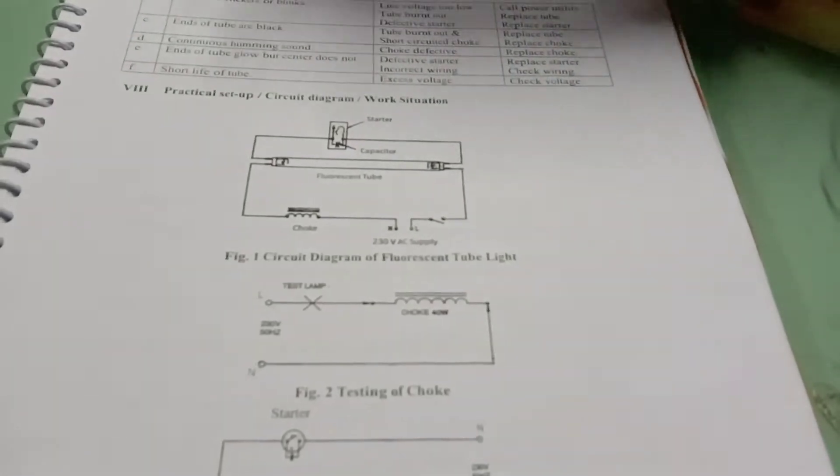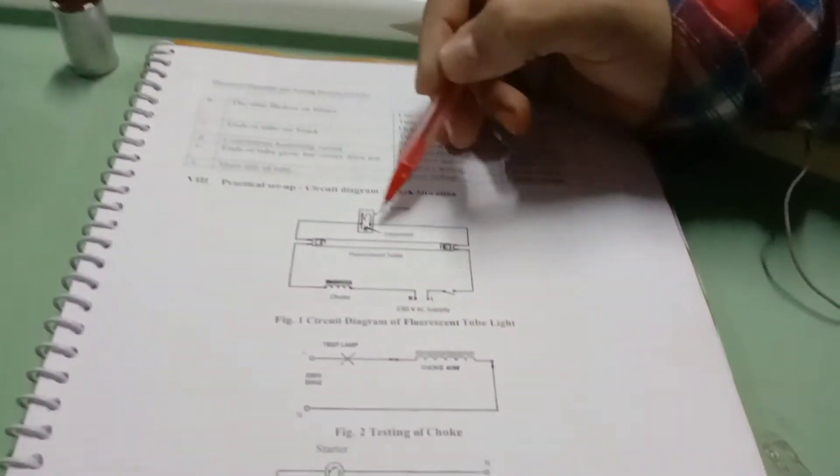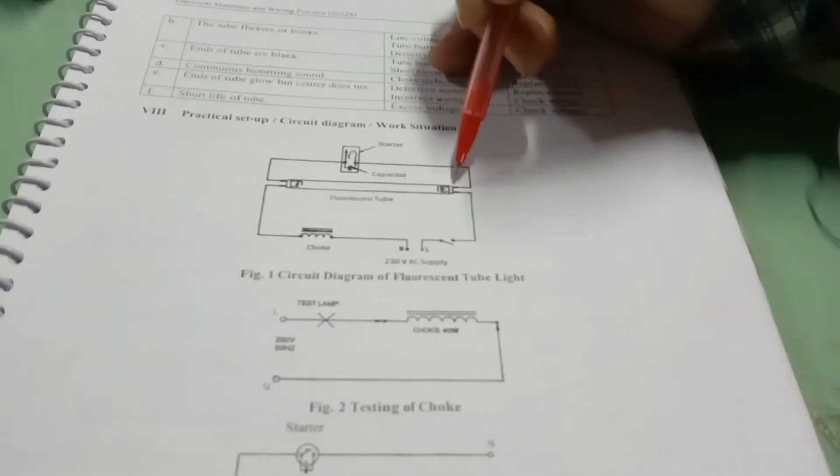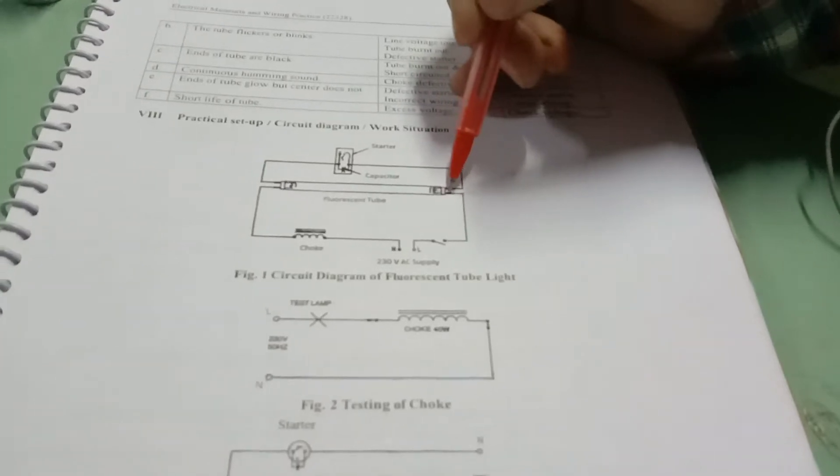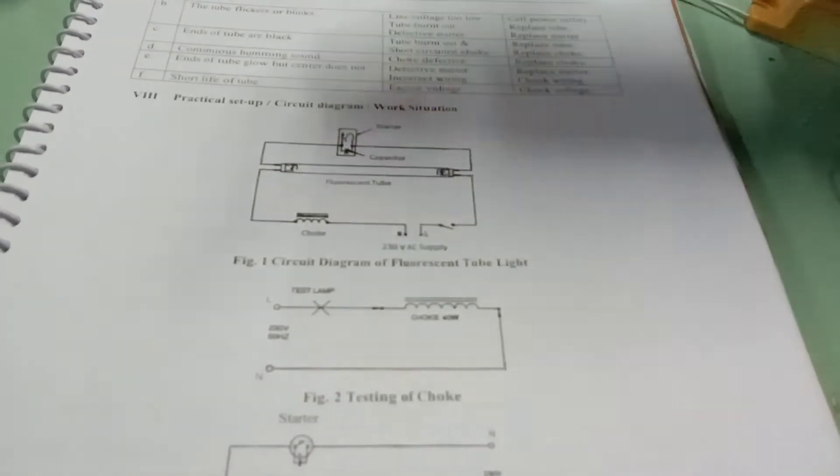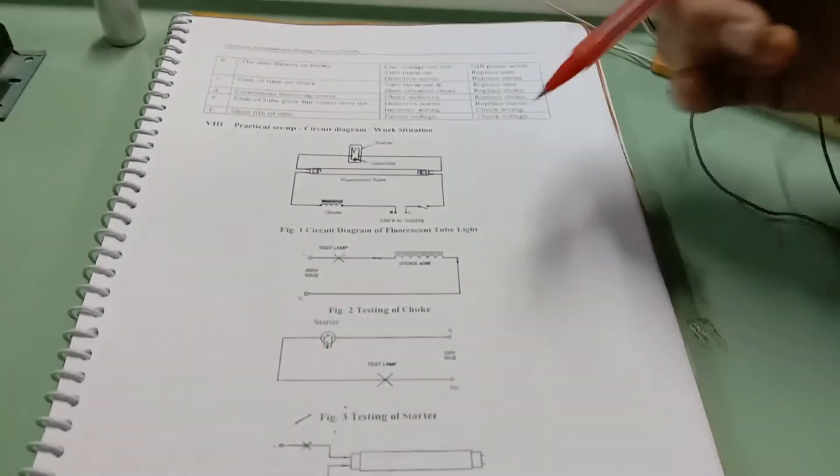This is the starter we are going to see in the practical. Then second terminal of starter we are going to connect to the another terminal of this tube light or tube rod. And from these remaining two terminals we are going to connect to the switch. This is the actual circuit diagram.